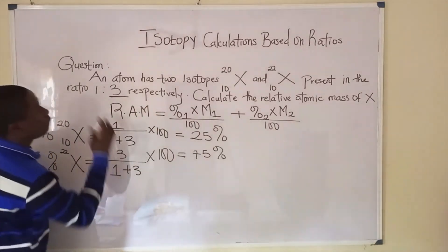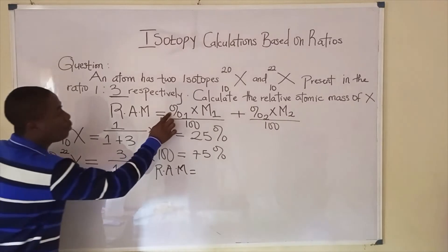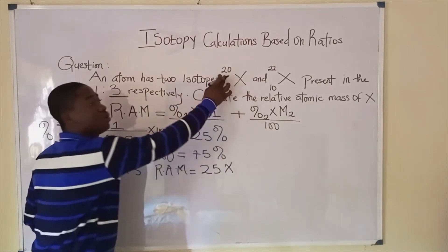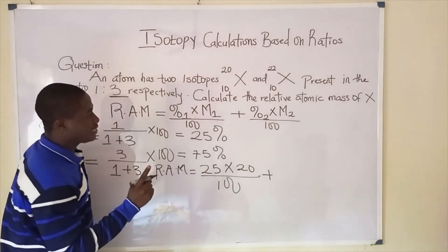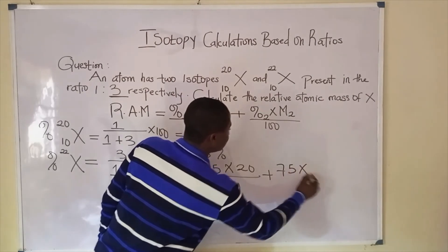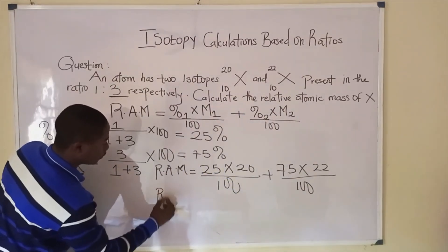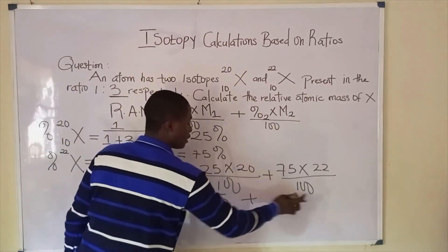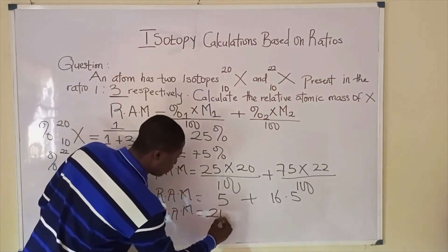We can now apply the formula. To solve the relative atomic mass of x, we get: Relative Atomic Mass equals the percentage abundance of the first isotope, which is 25%, times the mass number 20, divided by 100, plus the percentage abundance of the second isotope, which is 75%, times the mass number 22, divided by 100. When we calculate: 25/100 × 20 gives 5, and 75/100 × 22 gives 16.5. So the relative atomic mass of the element x becomes 21.5.